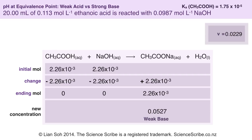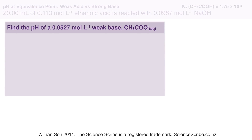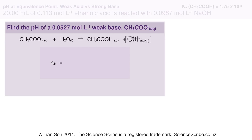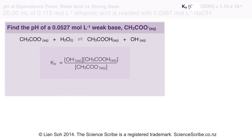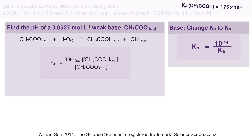Since sodium ethanoate is a weak base and I'm trying to find the pH at equivalence point, this is equivalent to finding the pH of a weak base — specifically 0.0527 mol/litre ethanoate. We always start with an equation and then a K expression, with products on top and reactants on the bottom for concentrations. We've been given Ka = 1.75 × 10⁻⁵, but because I have a Kb expression I need to convert using Ka × Kb = 10⁻¹⁴. Rearranging gives me a value for Kb, which I bring back into my original formula.